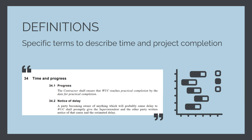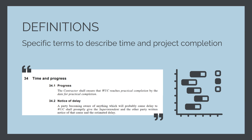We'll go through some timelines to explain these definitions. Let's start with the widely used contract term: a separable portion. A separable portion is a scope of works that has its own practical completion date. So rather than having a single practical completion date for the whole project, the project may be broken down into stages with separate practical completion dates.